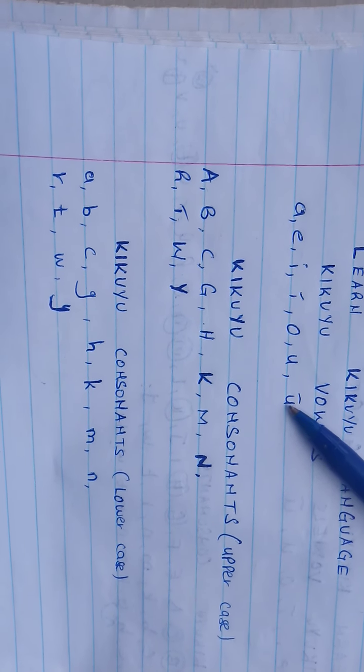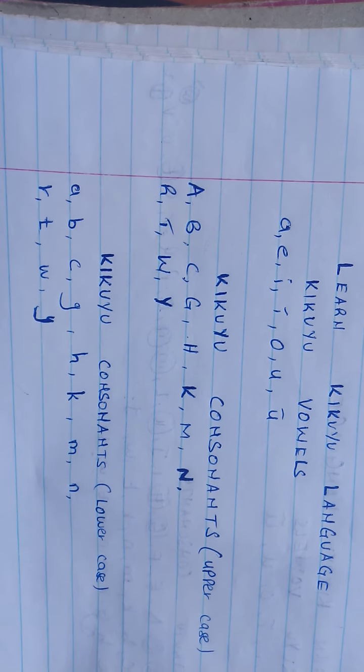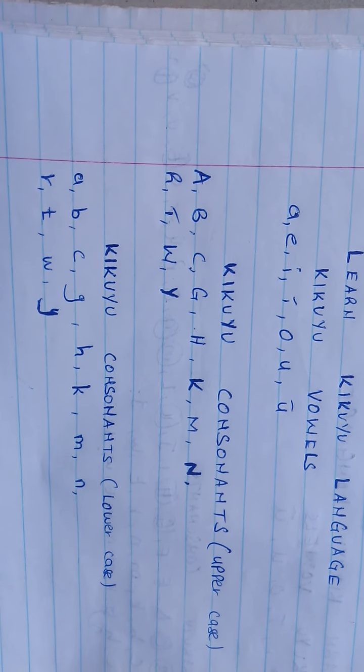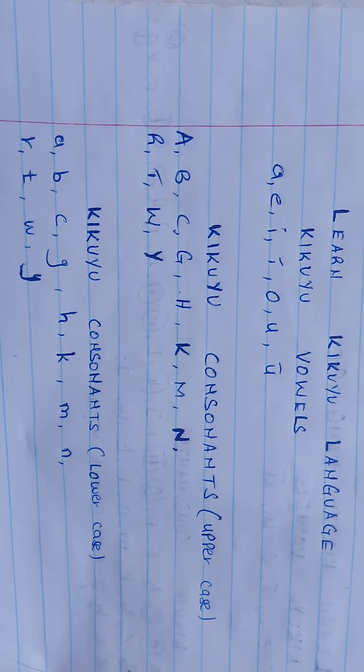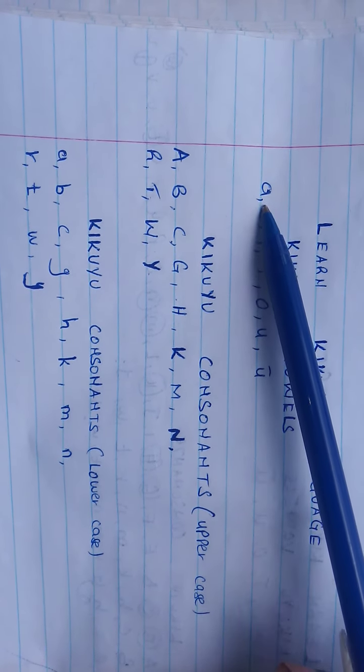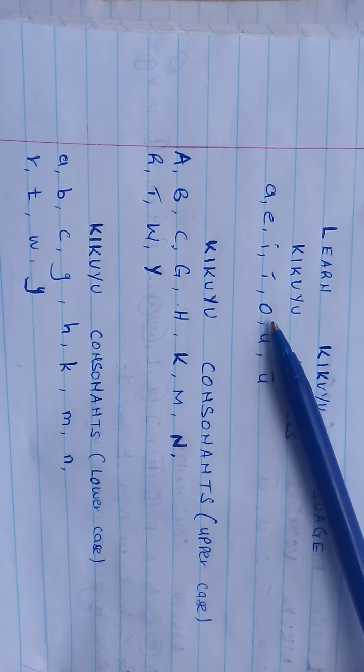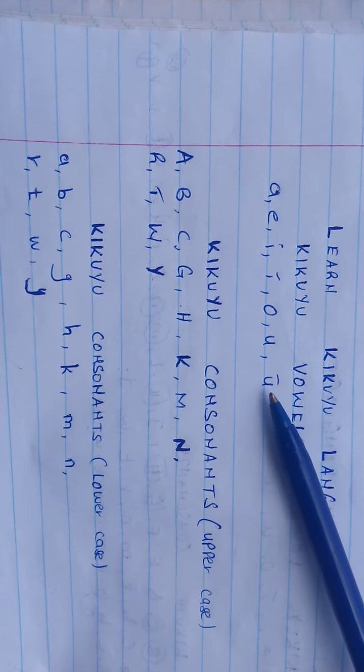My dear viewer, please practice saying these vowels in Kikuyu. How do we say them again? A, E, I, E, O, U, and O.